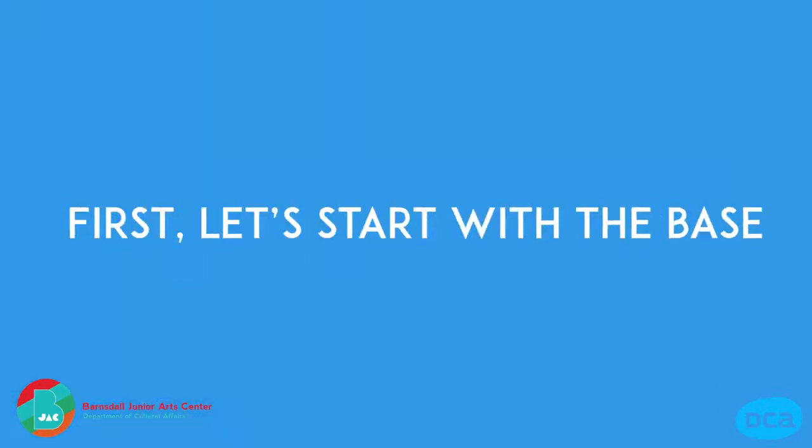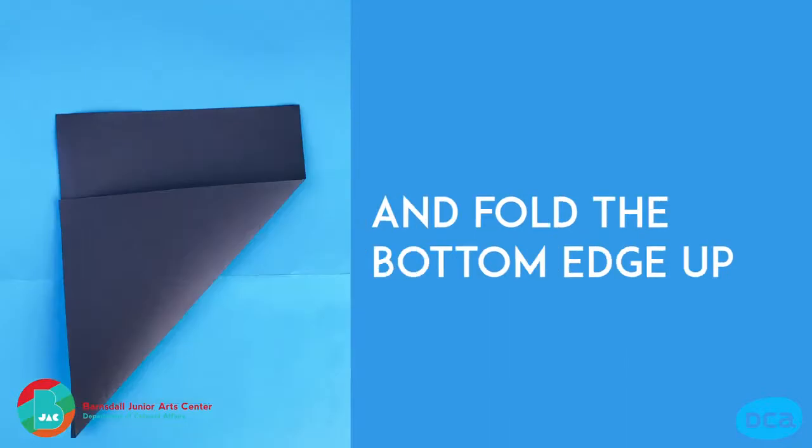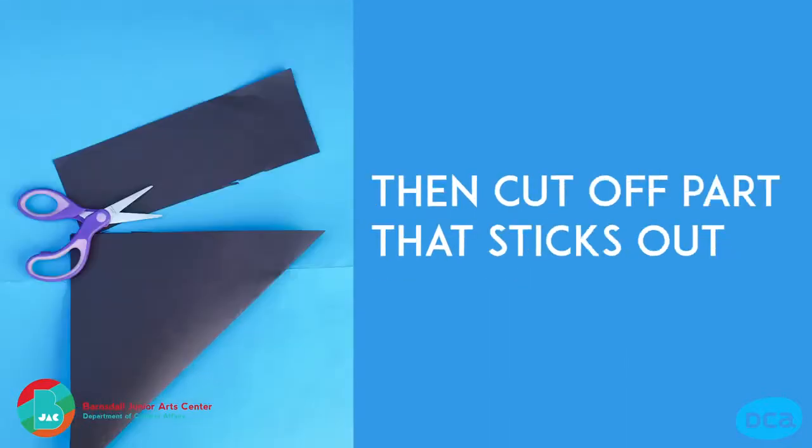First, let's start with the base. Take your paper and fold the bottom edge up. Then cut off the part that sticks out. Now you have a square.